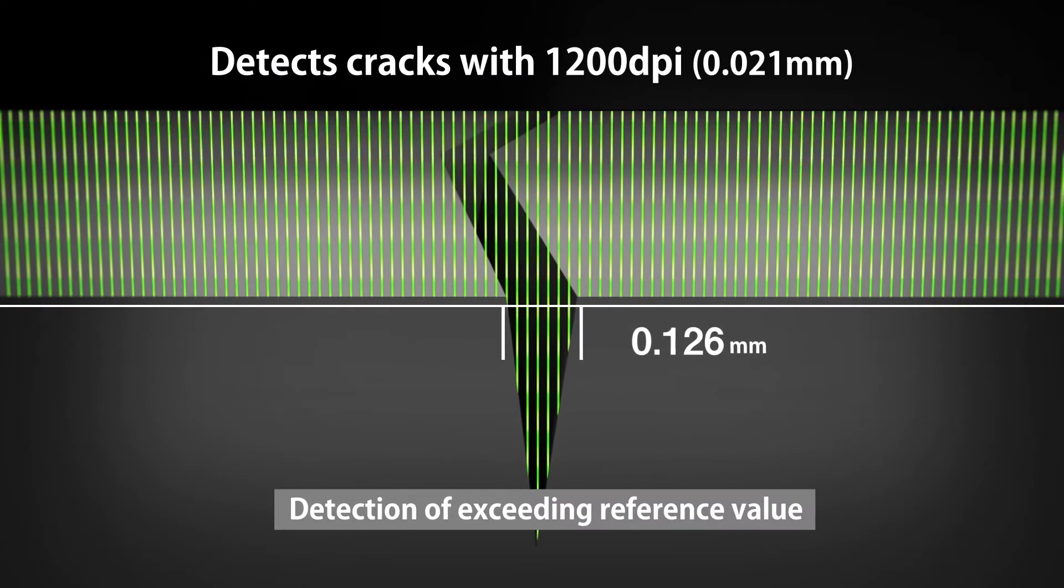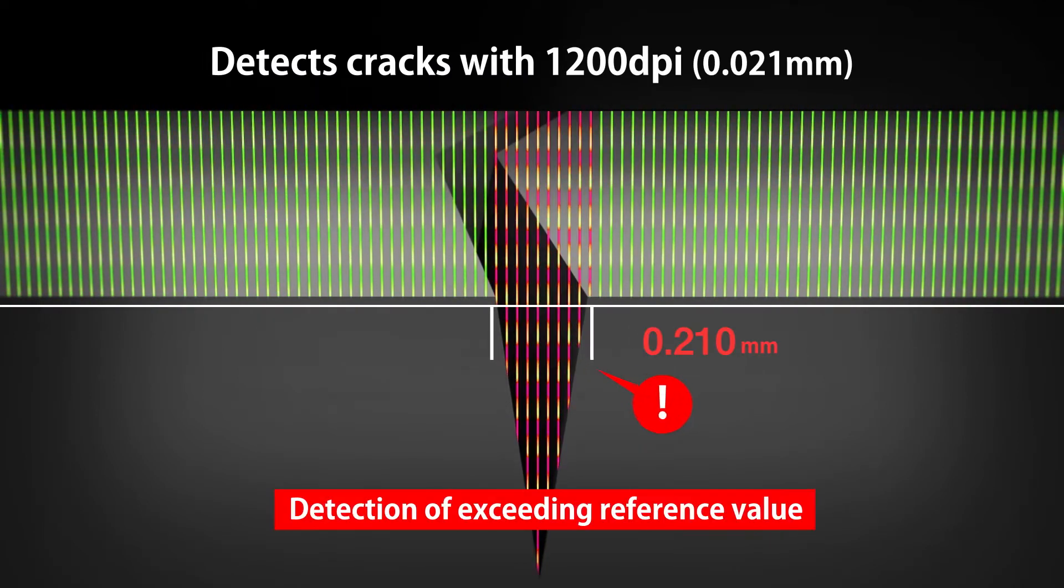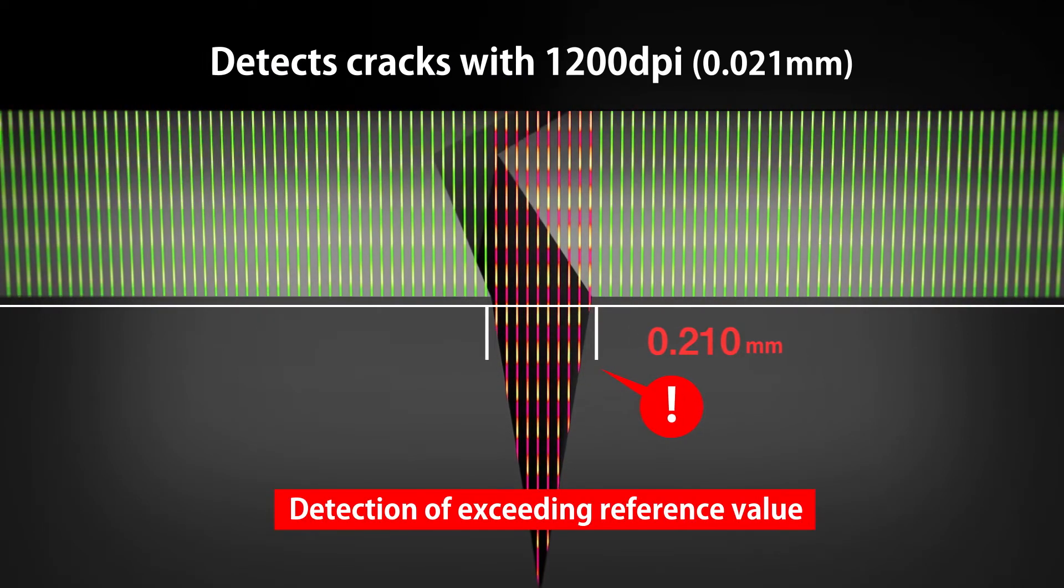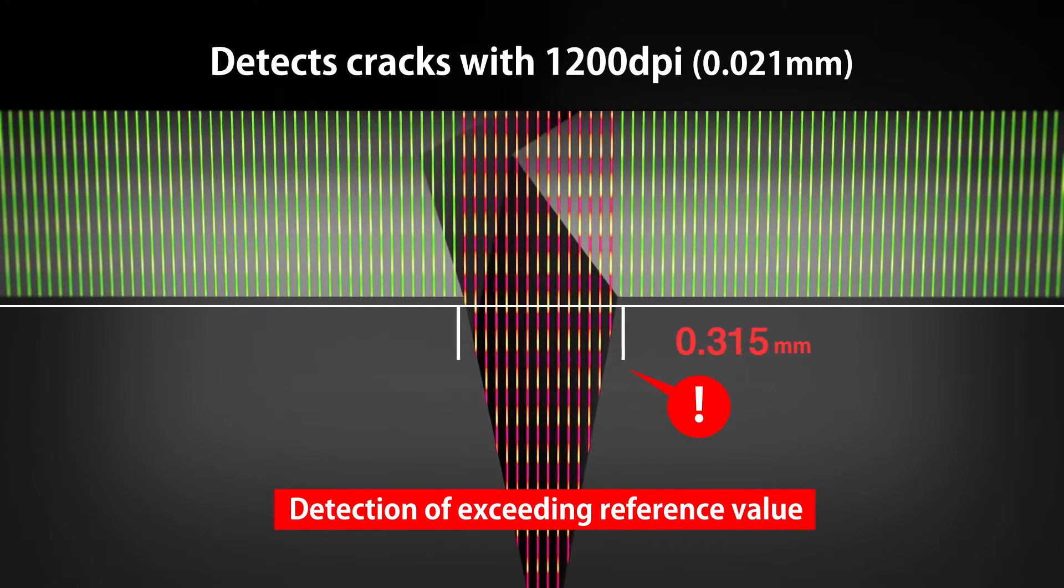With the 1200 DPI CIS, detection accuracy can realize 0.021 millimeters correctly.